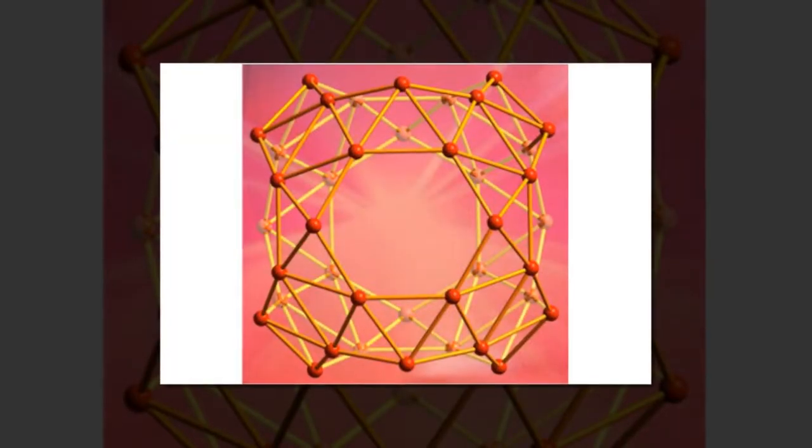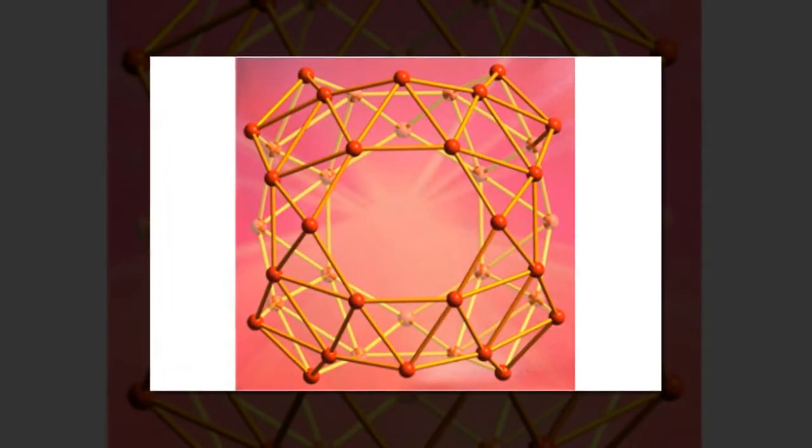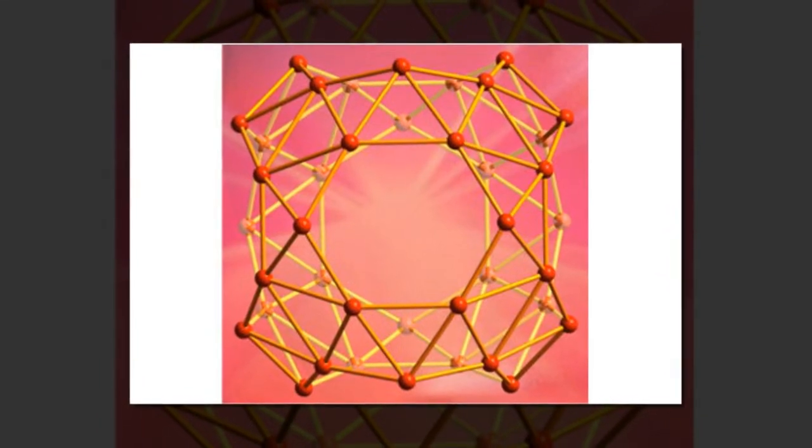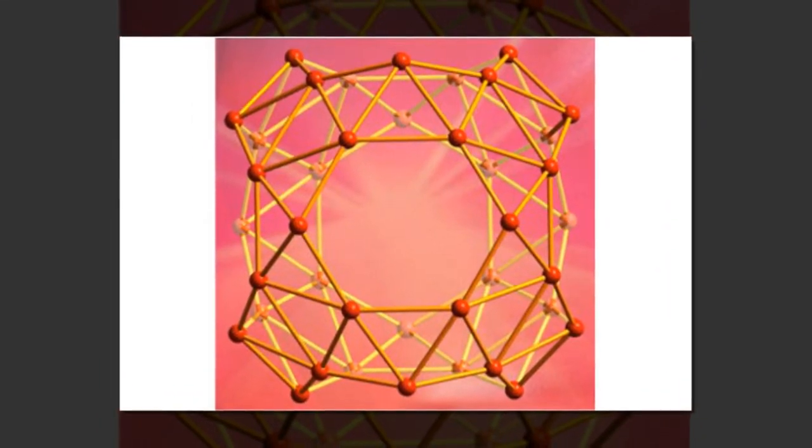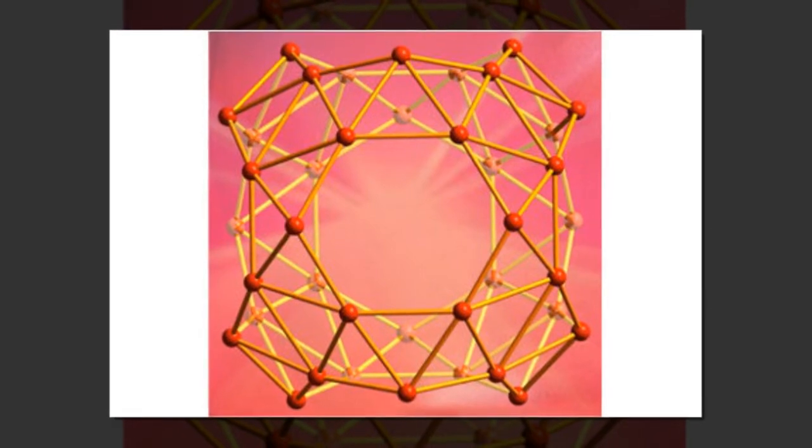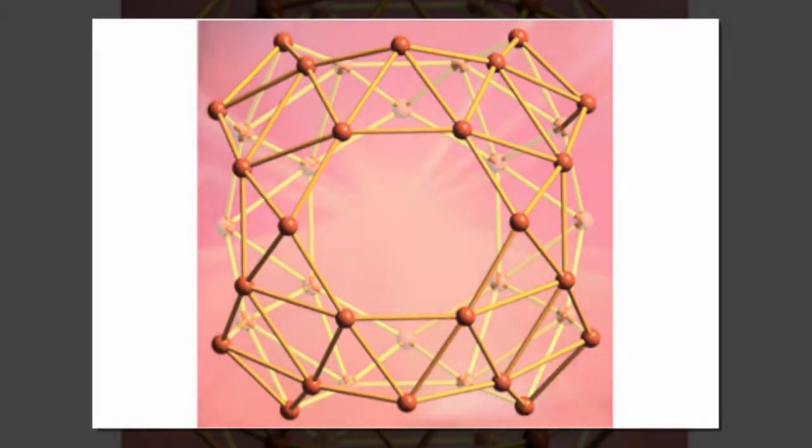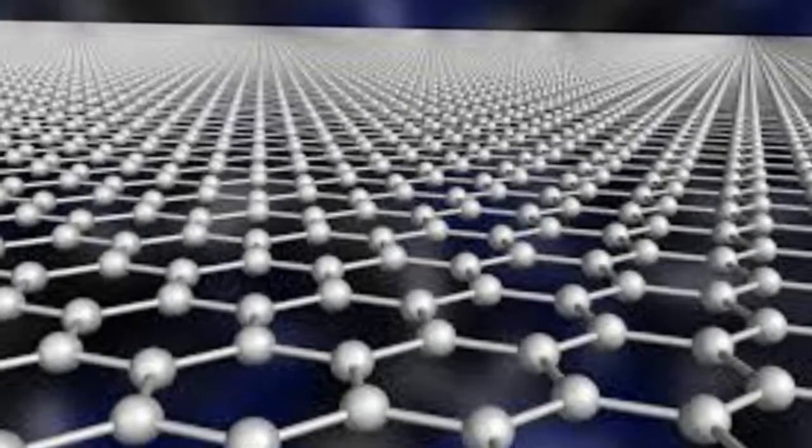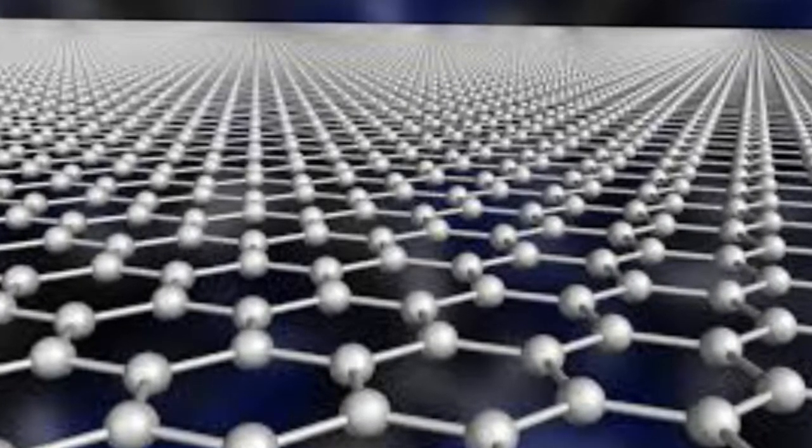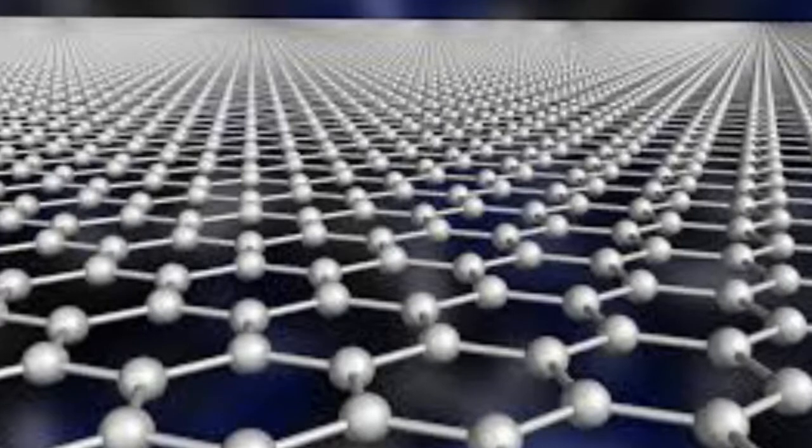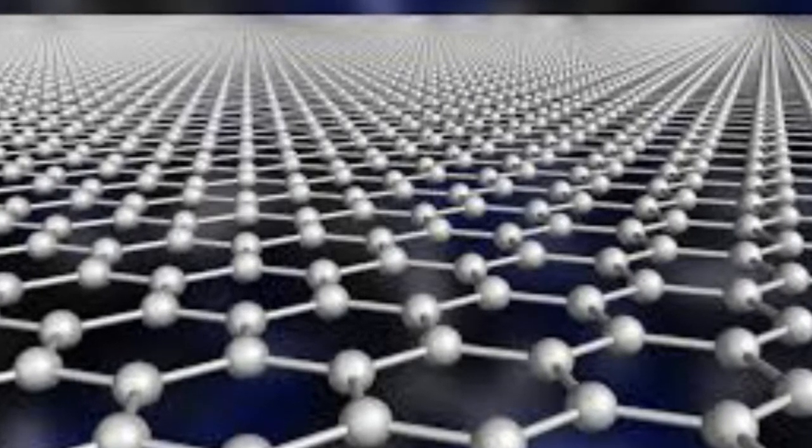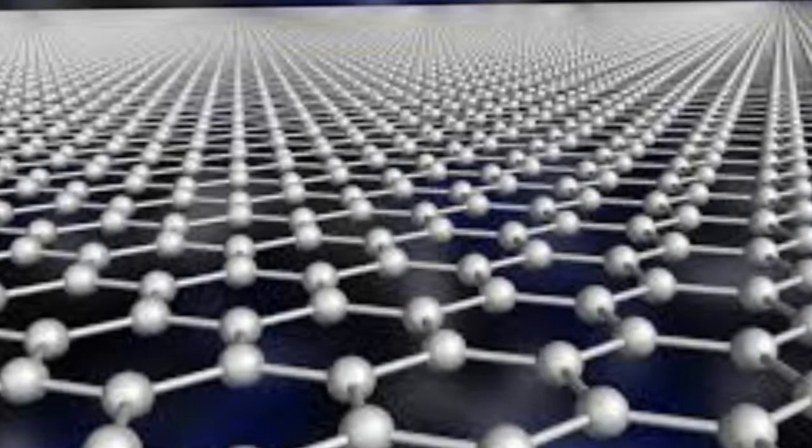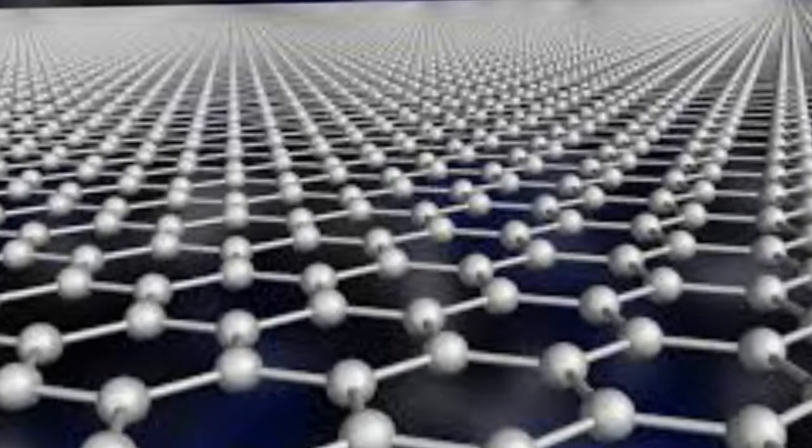To date, Dirac loops have never been experimentally observed and have only been predicted to exist in a few finely tuned materials. The scientists' analysis revealed that Dirac loops can theoretically form when chains of trigonally connected carbon atoms are stacked perpendicular to each other. This arrangement differs from graphite, which is also a 3D form of carbon, but in graphite the layers are stacked on top of each other like a stack of paper.